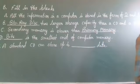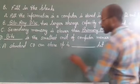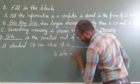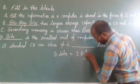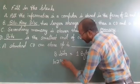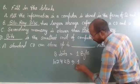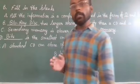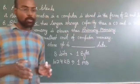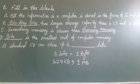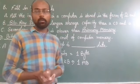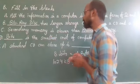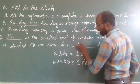8 bits is equal to 1 byte. And 1024 kilobytes is equal to 1 MB. So bit is the smallest unit of computer memory. Question number E: a standard CD can store up to how much data? A standard CD can store up to 700 MB data.